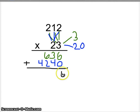We add our 1's, we get 6. We add our 10's, we get 7. We add our 100's, we get 8. And we add our 1000's, we get 4, to get a final product of 4,876.